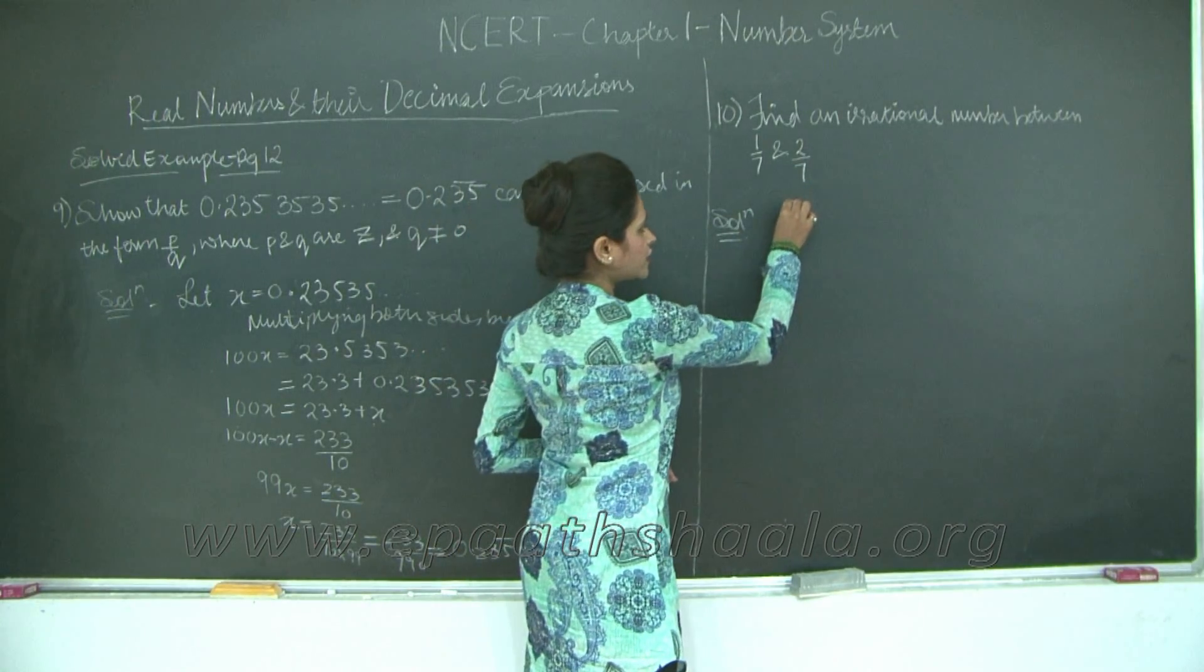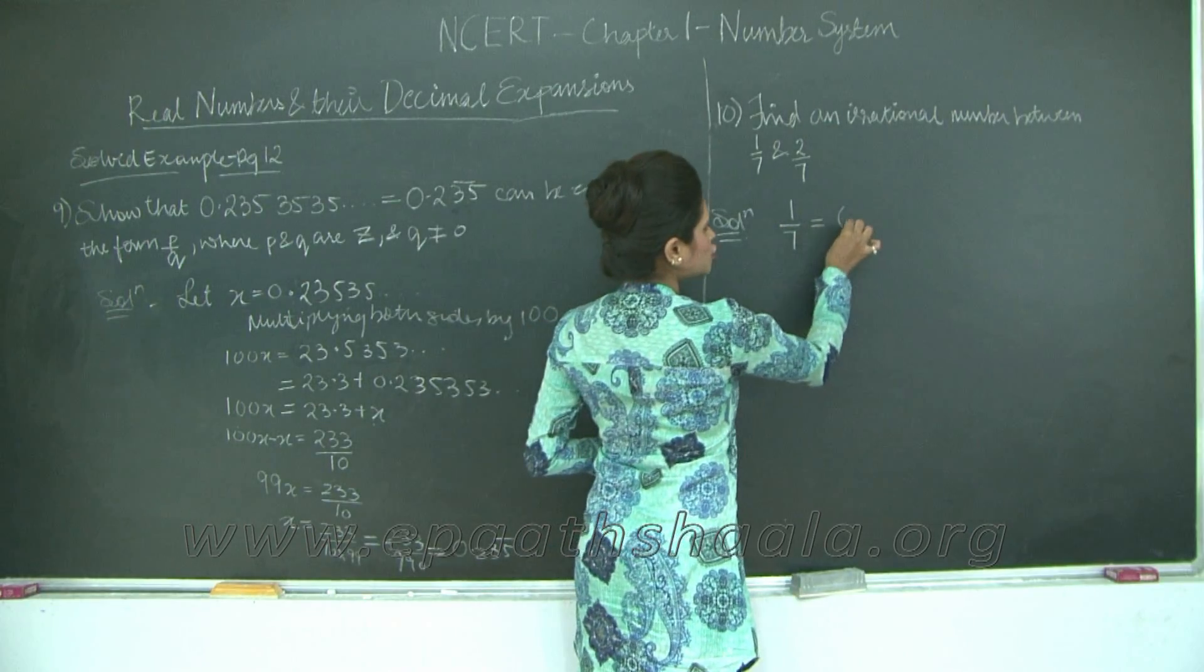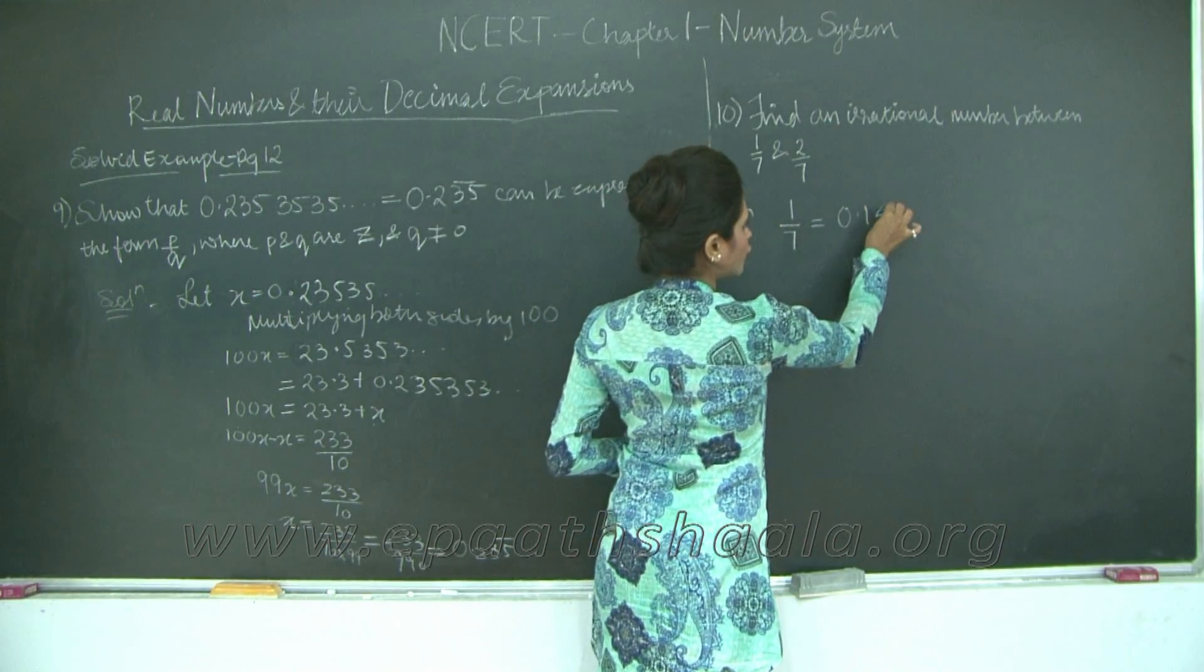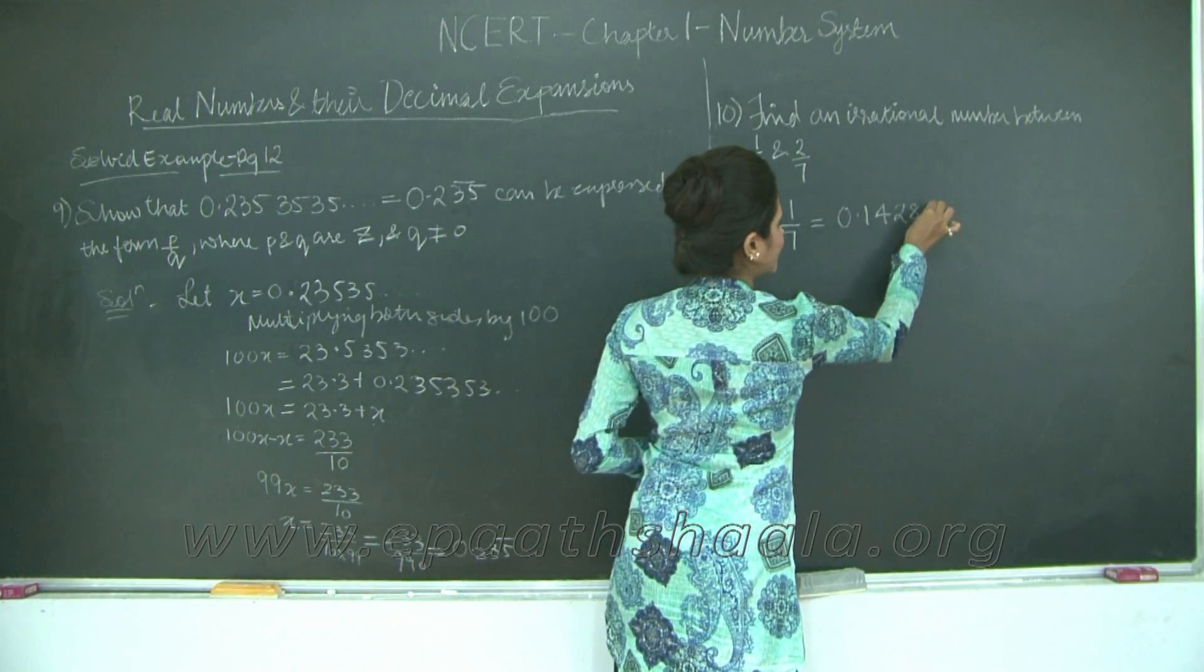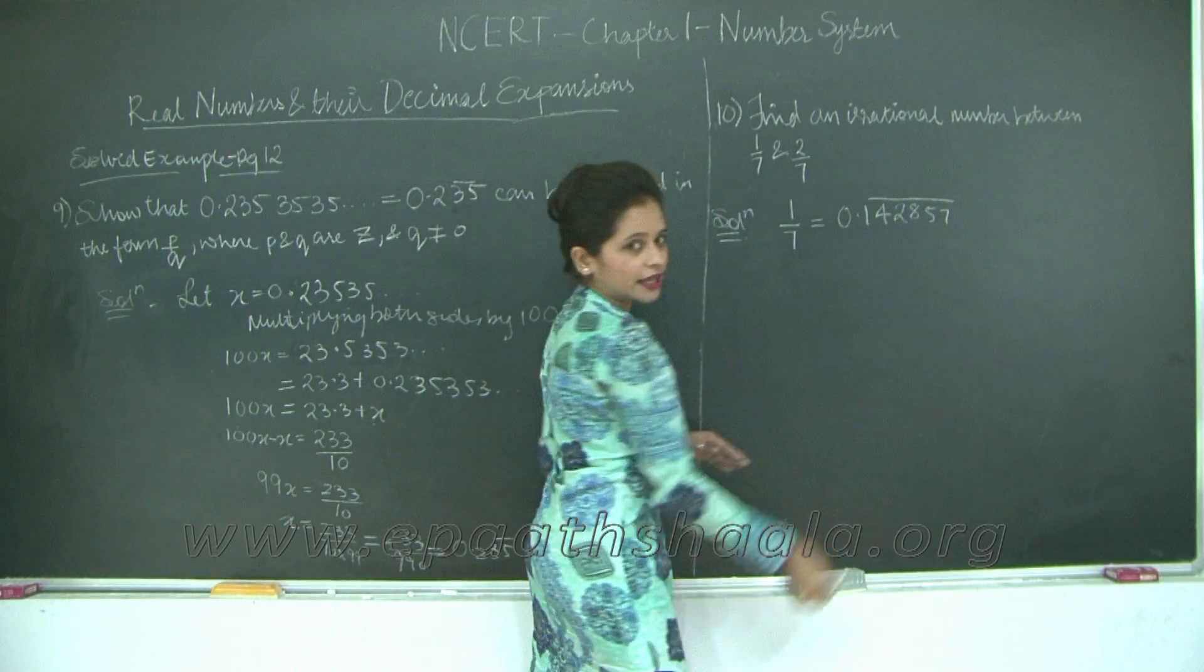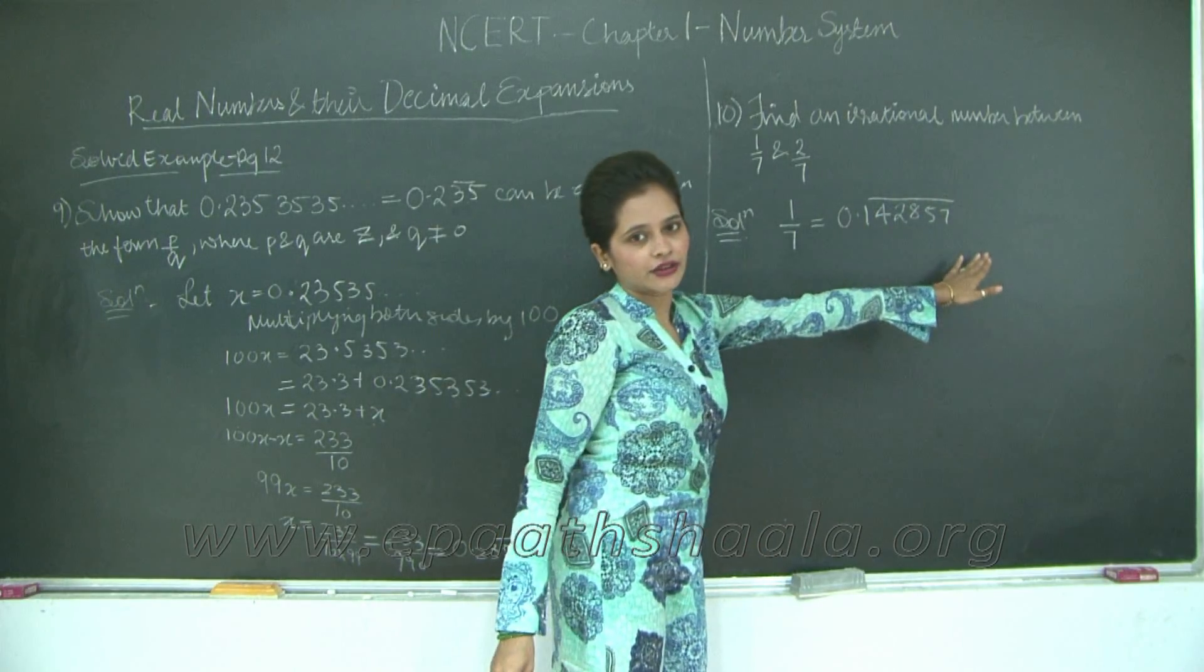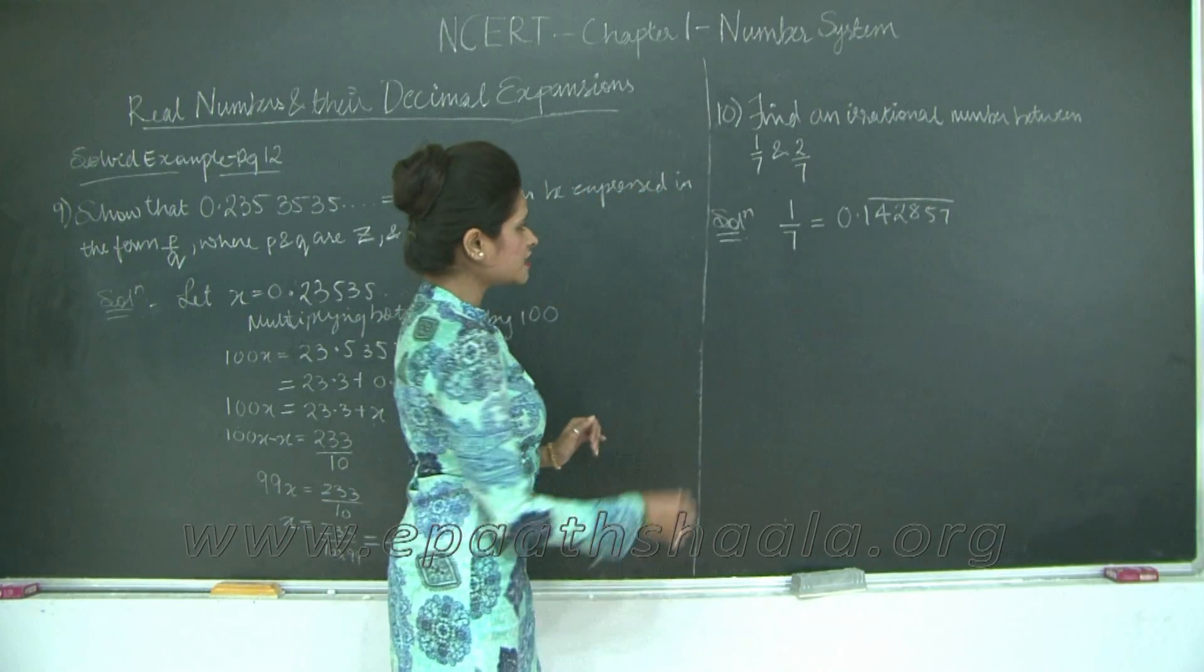Find an irrational number between 1 upon 7 and 2 upon 7. We saw in the previous examples that 1 upon 7 is 0.142857 bar, bar from 1 to 7. That means these six digits are going to repeat in a loop, one after the other in a pattern.